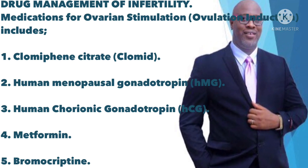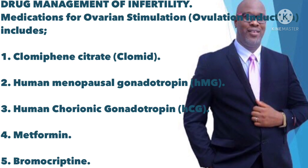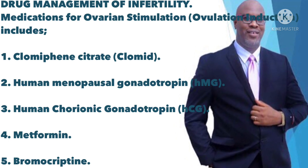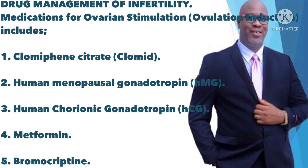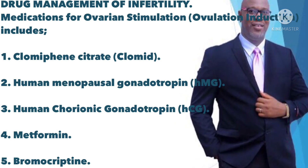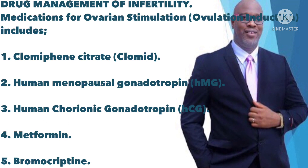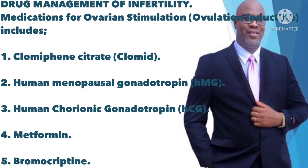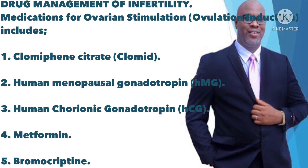Medications for ovarian stimulation — ovulation induction. Fertility drugs regulate or stimulate ovulation. They are the main treatment for women who are infertile due to ovulation disorders. Fertility drugs generally work like the natural hormones follicle stimulating hormone (FSH) and luteinizing hormone (LH) to trigger ovulation. They are also used in women who already ovulate, to stimulate better egg production or extra eggs. These fertility drugs include: 1) Clomiphene citrate (Clomid), administered orally. It stimulates ovulation by causing the pituitary gland to release more FSH and LH, which stimulate the growth of an ovarian follicle containing an egg. These two hormones work together to encourage follicle development in the ovaries toward maturation and, eventually, ovulation.